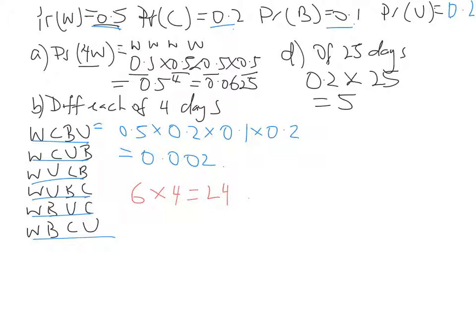So therefore, the probability of different transport each day, I'm going to call it diff, is 24 times 0.002, and we end up with 0.048.